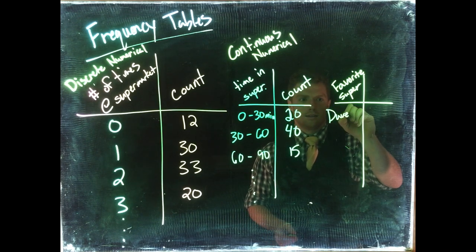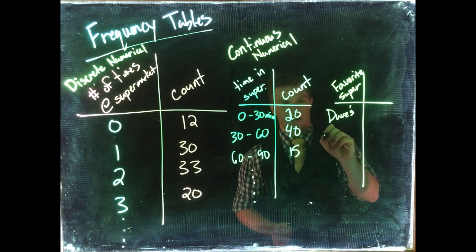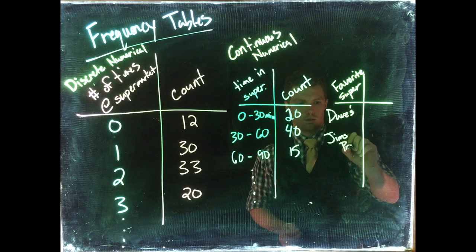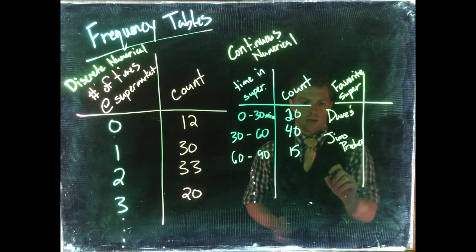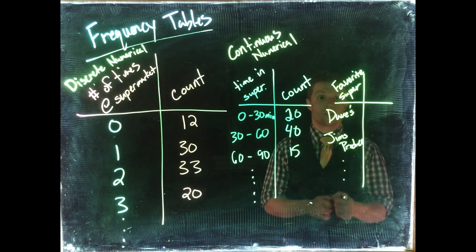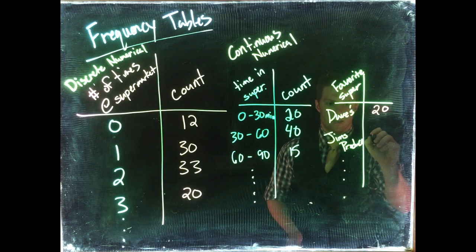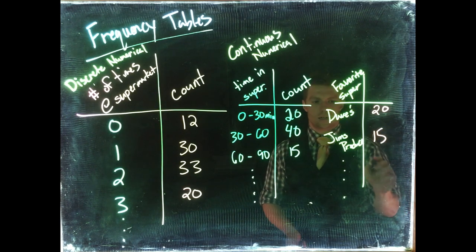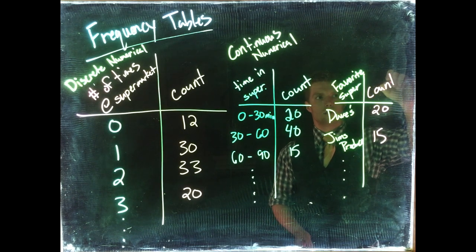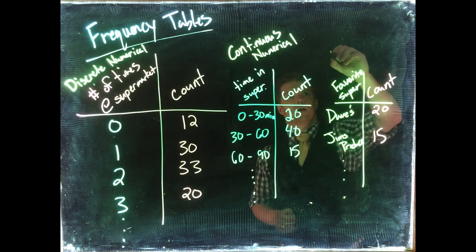And then we could do something like Jim's Produce, and you know, whatever other company that we go to. And then we could number those as well. We could say twenty people go there, we can say that fifteen go there, and continue filling in as well. And that's how we would handle our categorical data.